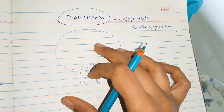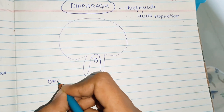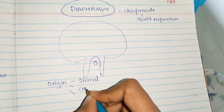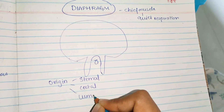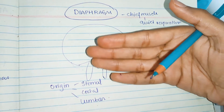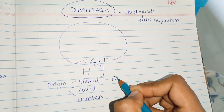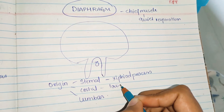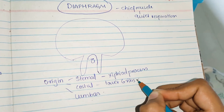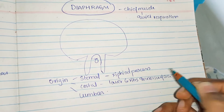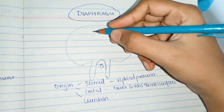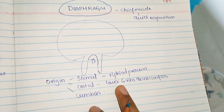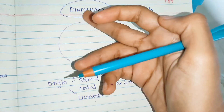The origin of the diaphragm muscles is divided into three parts. The first is the sternal origin, coming from the xiphoid process. The second is the costal origin, coming from the inner surface of the lower six ribs. So the anterior side comes from the xiphoid process and the sides from the lower six ribs' inner surface.